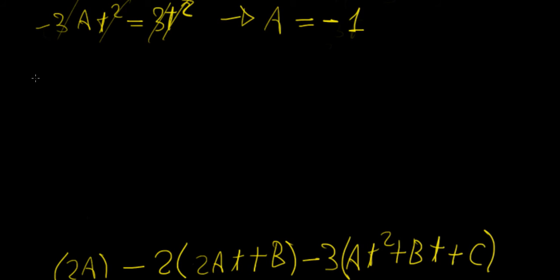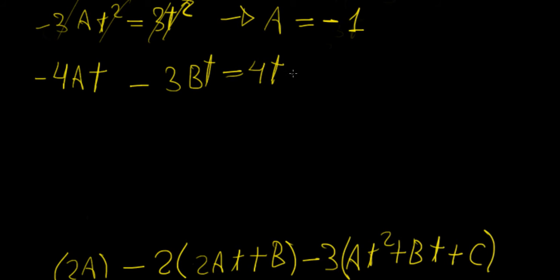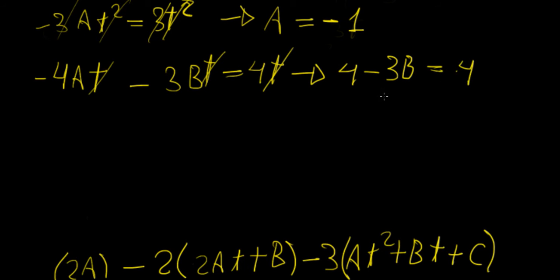The second one is going to be b. We group the terms that have a t in them: minus 4at minus 3bt equals 4t. We already found a equals minus 1, so minus 4at becomes 4t. After cancelling all the t's, we get 4 minus 3b equals 4, which implies that b is equal to 0.